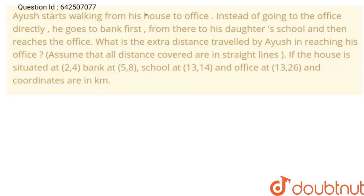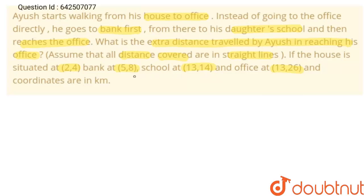Hello students. The question is: Ayus starts working from his house to office. Instead of going to the office directly, he goes to the bank first, then to his daughter's school, and then reaches the office. What is the extra distance traveled by Ayus in reaching his office? Assume all distances covered are in a straight line. The coordinates are: house at (2,4), bank at (5,8), school at (13,14), and office — all coordinates are in kilometers.